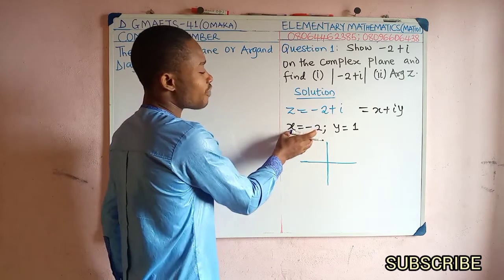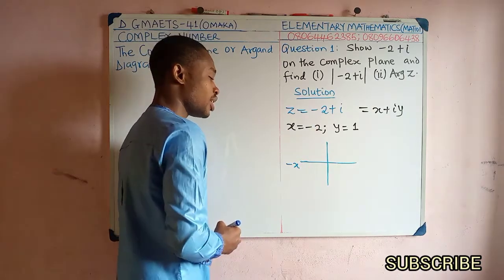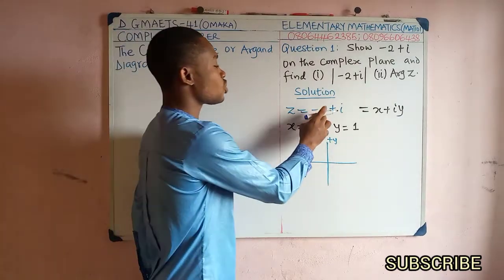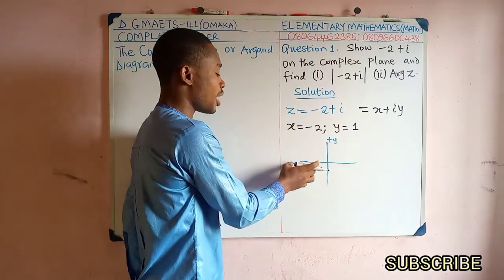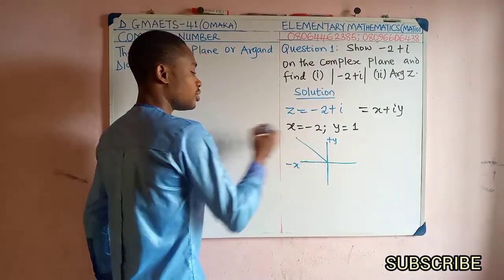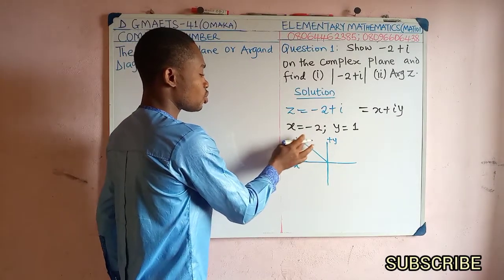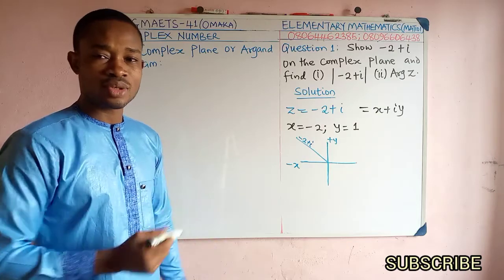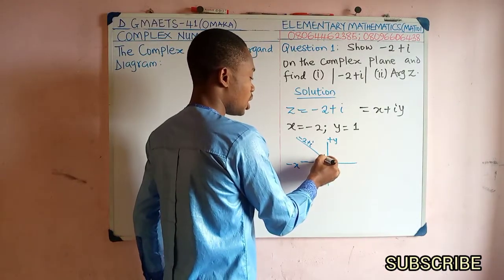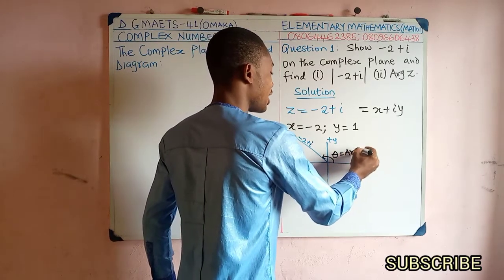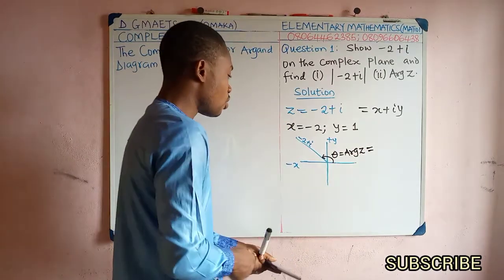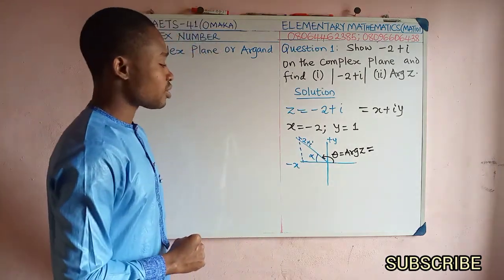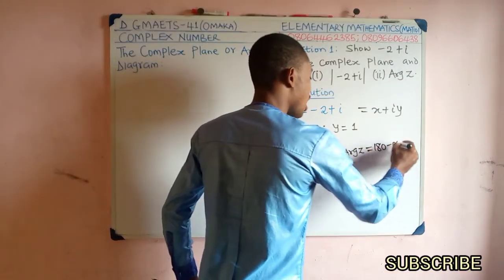We draw the complex plane — the Argand diagram. X is negative, so it lies on the negative X-axis; Y is positive, so it is on positive Y. Therefore, the complex number −2 + i is located in the second quadrant, between positive Y and negative X. We draw the complex number line Z from the origin into that quadrant. The argument theta equals arg(Z), and this is 180° minus alpha, where alpha is the angle with the negative X-axis.